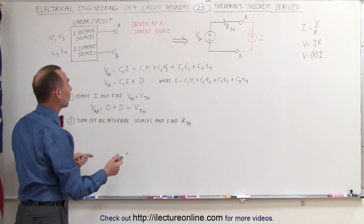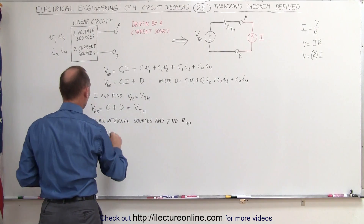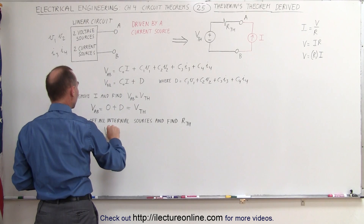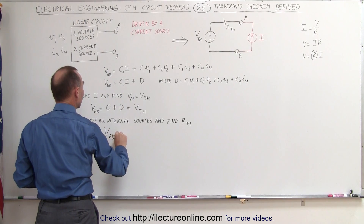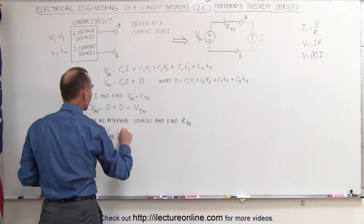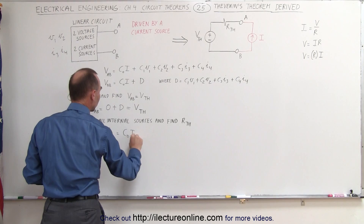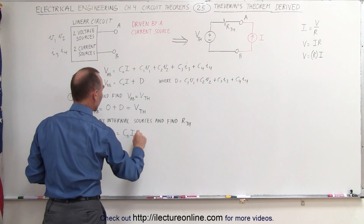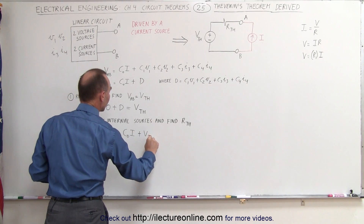All we have to do is replace D with the Thevenin voltage. Now we can write that V from A to B equals the contribution of the current source driving the circuit plus the Thevenin equivalent voltage.